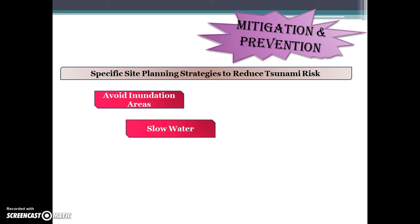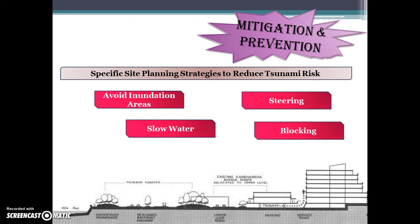Mitigation and Prevention: Specific Site Planning Strategies to Reduce Tsunami Risk. Tsunami, like most natural disasters, is beyond human control. However, a number of techniques can minimize harmful effects, such as building structures for individuals and communities, effective warning systems, thoughtful design, and strong community organization. A water avoidance area is the first-point strategy — placing buildings and infrastructure away from hazard areas or on high ground. Slowing water is the second point: forests, ditches, slopes, or berms can slow down, buffer, and filter out the wave, depending on correctly estimated tsunami force. Steering is the third point: water can be directed at a vertical angle toward ditches to reduce the impact of violent waves.